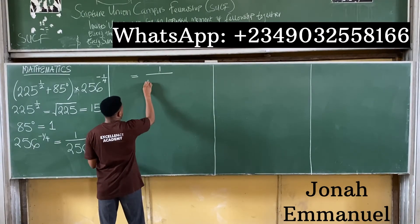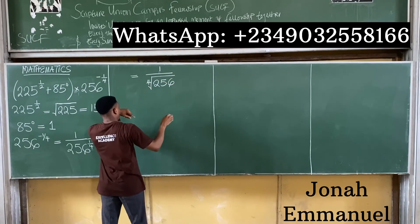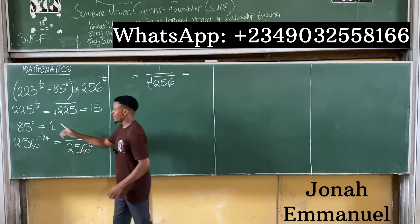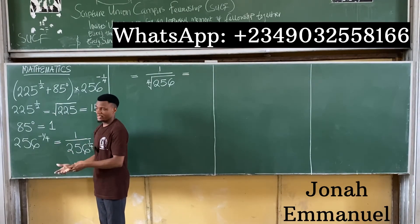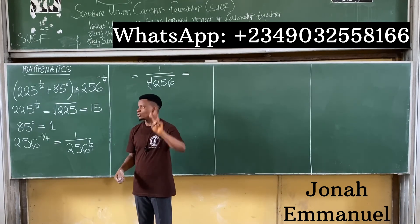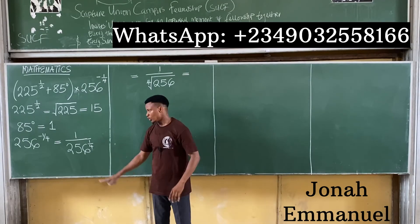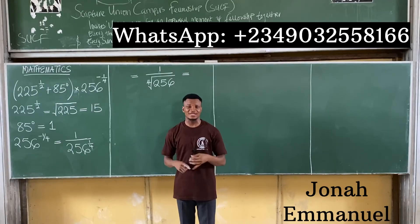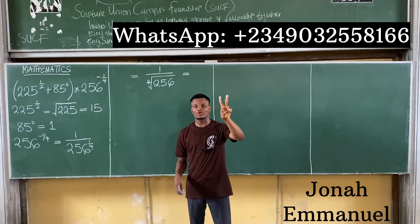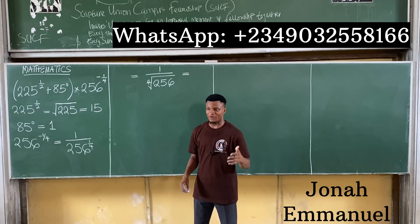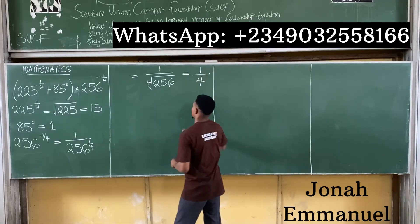Using the rational index law, 256 to power one quarter means the fourth root of 256. I'm looking for a number that multiplies itself four times to give 256. That number is 4, because 4 times 4 times 4 times 4 equals 256. So 256 to power negative one quarter equals 1 over 4.